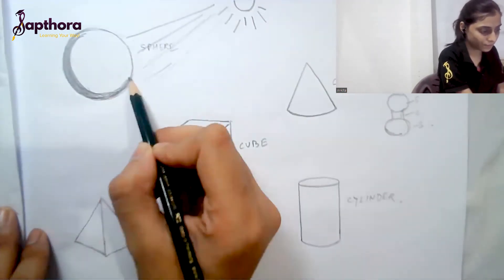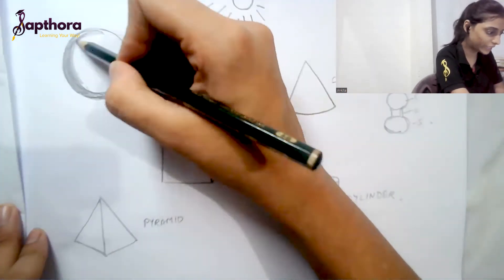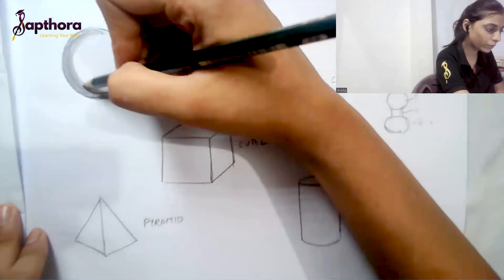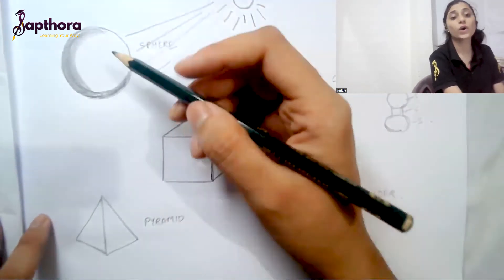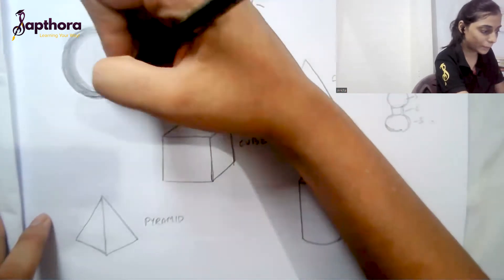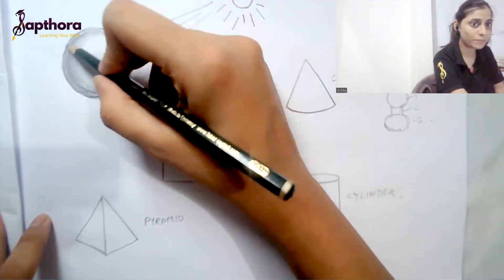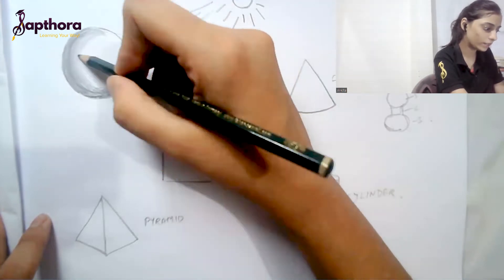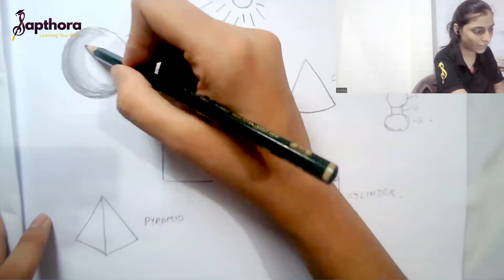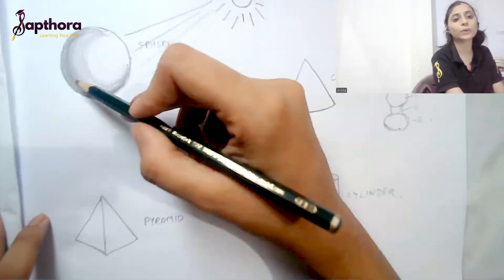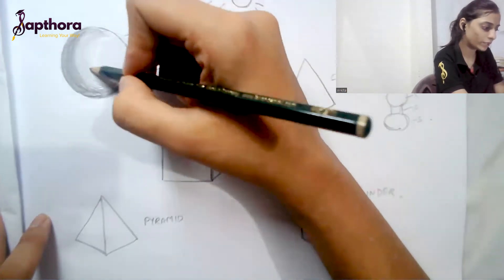Done with the dark tone. Now slowly move to the medium tone — either use a lighter grade pencil or decrease the pressure using the same pencil. Make sure you keep the strokes curved. Once you're done with the medium tone, you can see the two different tones. Mix the dark and medium tone, then move to the light tone.